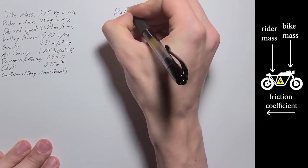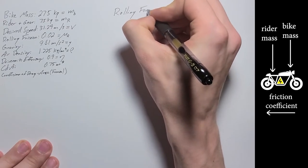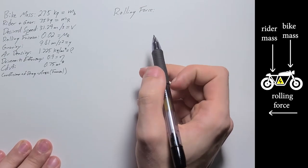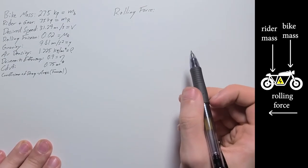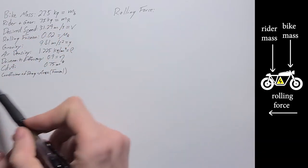So these are the given values that we have for this setup. So next on to the first equation. This is going to be for the power needed, or the rolling force.